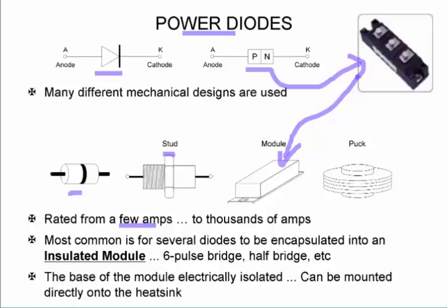is your insulated module which has got a 6 pulse bridge. So there are 6 diodes basically in this module. Now the base of this module is electrically isolated and that means we can directly mount it on the heat sink.